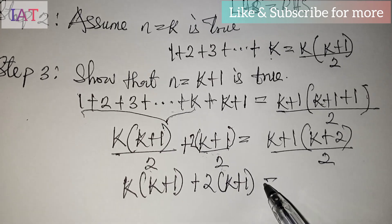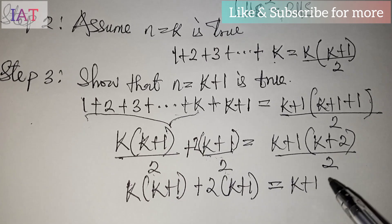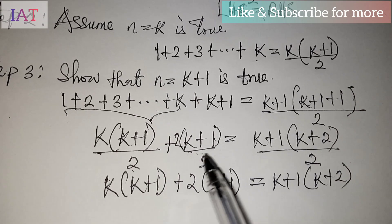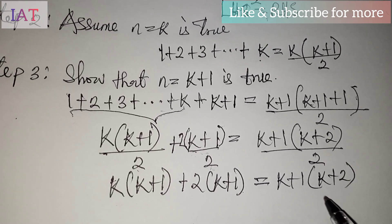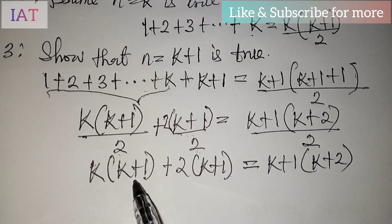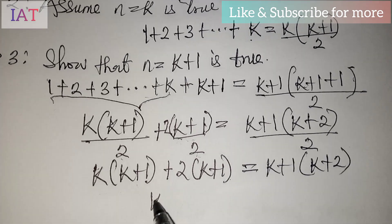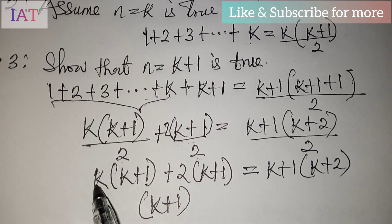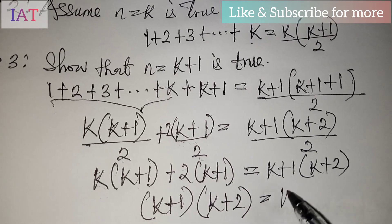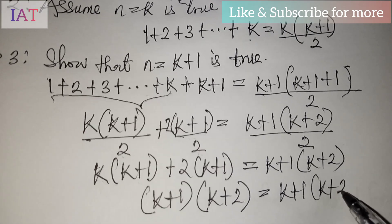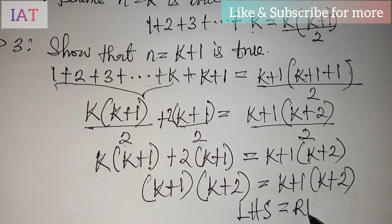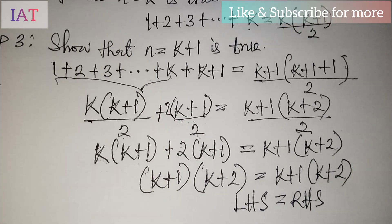The numerator becomes k(k+1) plus 2(k+1). We can factor out (k+1) since it is common to both terms, giving us (k+1)(k+2). So the left hand side equals (k+1)(k+2) all over two, which is exactly the right hand side. The left hand side equals the right hand side, confirming n equals k plus one is true.